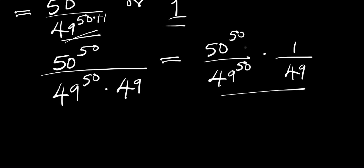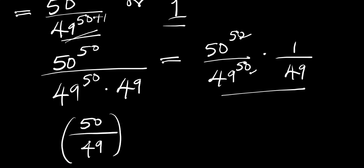Since the exponents are the same, we can write this as 50 divided by 49, all to the power of 50, times 1 divided by 49.